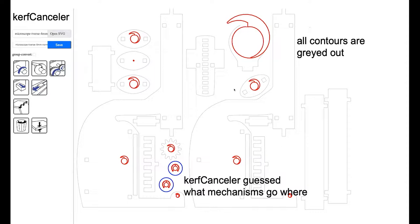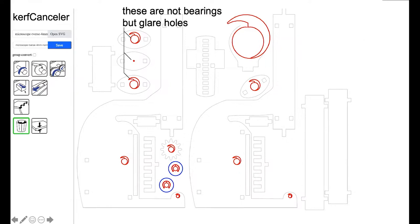KerfCanceler then guessed what mechanisms go where, based on circular cutouts in the model. The 2D cutting plan does not contain all the information required to completely reconstruct which mechanisms go where. KerfCanceler therefore relies on user input to get all the mechanisms in place.